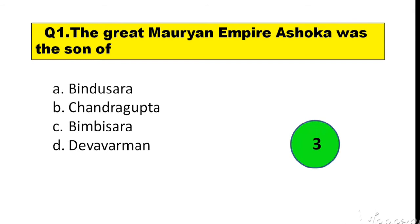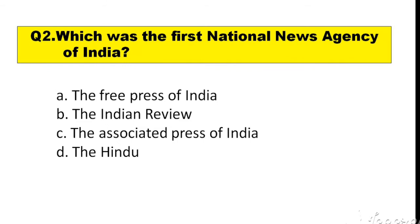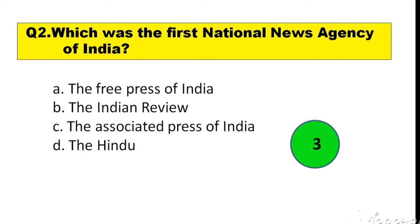Question number 2. Which was the first national news agency of India? Options are: A. The Free Press of India, B. The Indian Review, C. The Associated Press of India, D. The Hindu. The right answer is option C — The Associated Press of India.